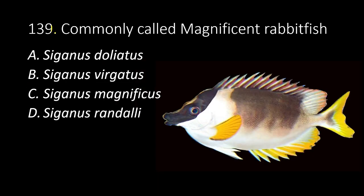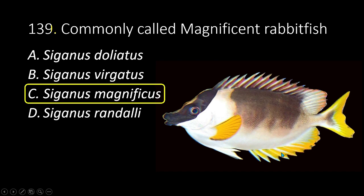139. Commonly called magnificent rabbit fish. A. Siganus doliatus. B. Siganus virgatus. C. Siganus magnificus. D. Siganus randalli. The answer is C, Siganus magnificus.